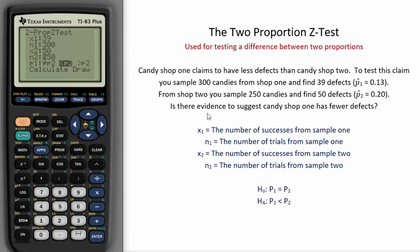Is there evidence to suggest Candy Shop 1 has fewer defects? Now, we must write out the alternative hypothesis, which would state that the true proportion of defects for store 1 is less than the true proportion of defects for store 2. I have highlighted it on the calculator.